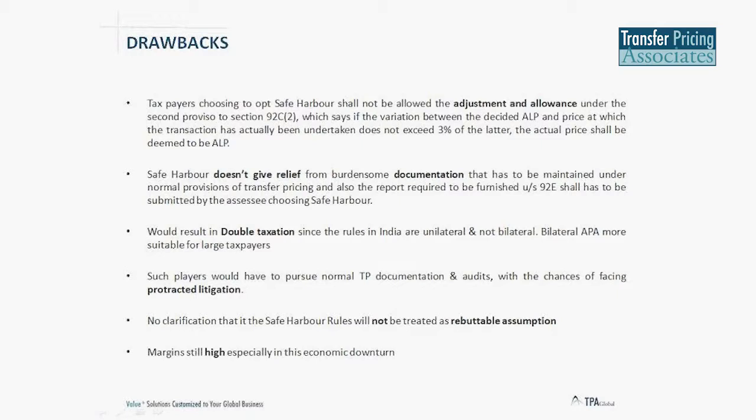What are the drawbacks of the Indian safe harbor rules? The government had previously allowed a 3% deviation from the arm's length price — that has not been allowed in safe harbor. The percentages are fixed. Even if a company is in its first year of operation and struggling to show the required margins, it must still meet that percentage with absolutely no leeway provided.